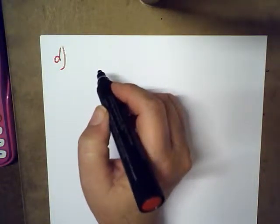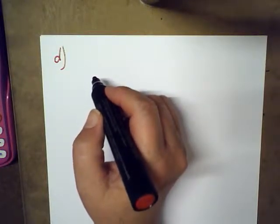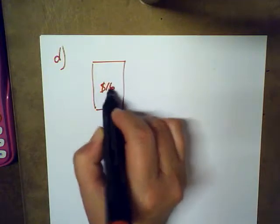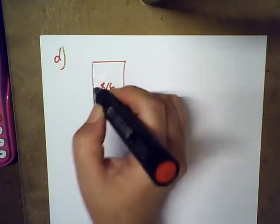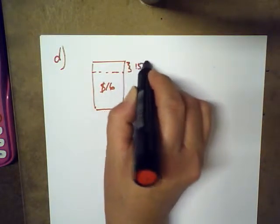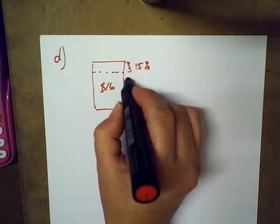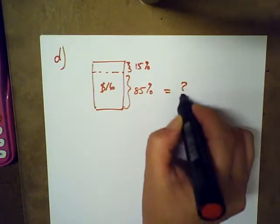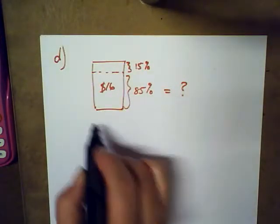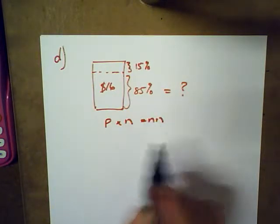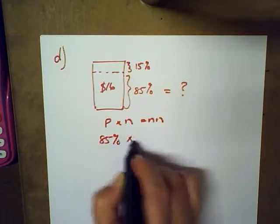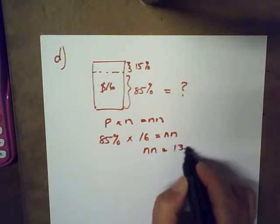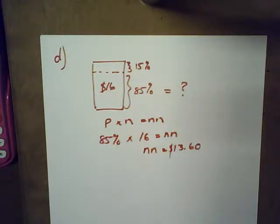On Wednesday the cost of the $16 ticket was reduced by 15%. I write down the original price in the box. If the price was reduced by 15%, then 85% of the original amount remains. So 85% of $16 gives us the new price. Calculating on my calculator: the new reduced price is $13.60.